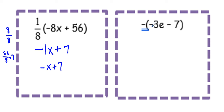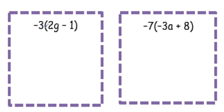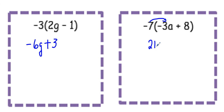We have a negative times a negative, which is a positive — 3e. A negative times a negative is a positive, 7. We have a negative times a positive, which is a negative — 3 times 2 is 6, and a g. We have a negative times a negative, which is a positive — 3 times 1 is 3. We have a negative times a negative, which is a positive — 7 times 3 is 21, and we have a. A negative times a positive is a negative — 7 times 8 is 56.